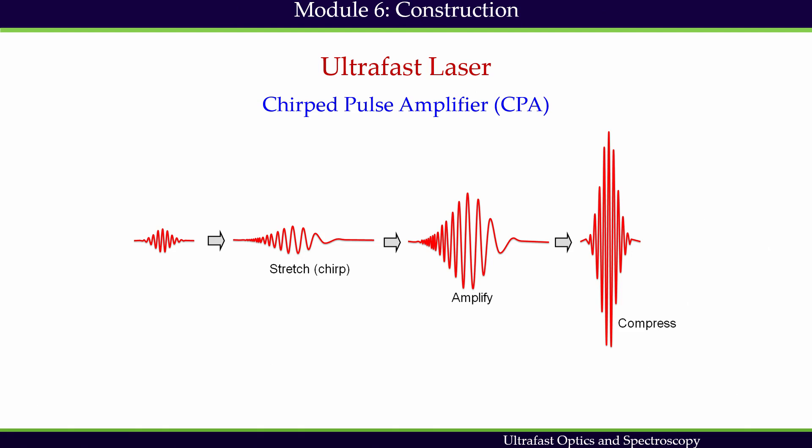The surface damage threshold varies based on thermal diffusion — how quickly the local heat is dissipated over the bulk of the optical element. Non-linear self-focusing causes bulk damage when a high intensity ultrafast pulse propagates through optical elements. Therefore, amplification of the output beam of the ultrafast laser oscillator is not a straightforward task.